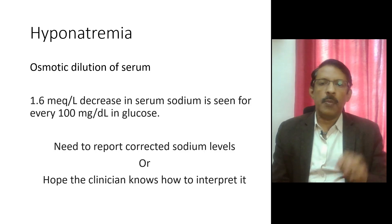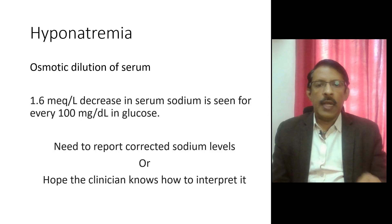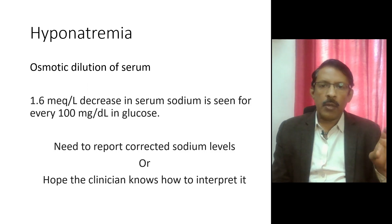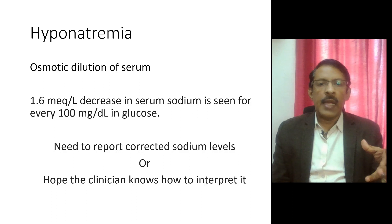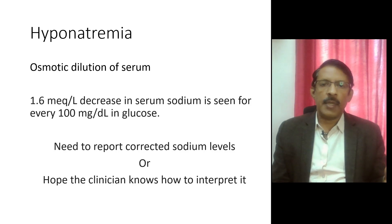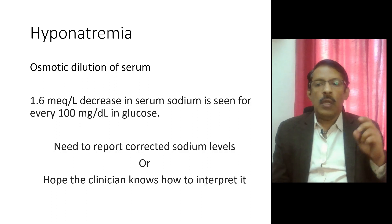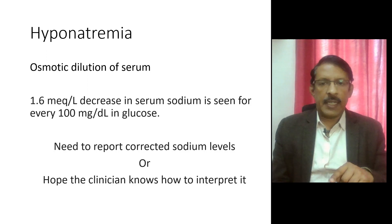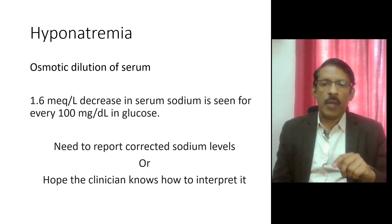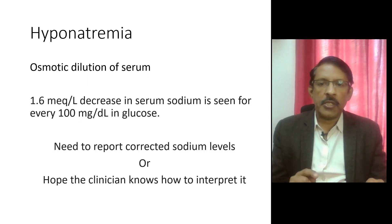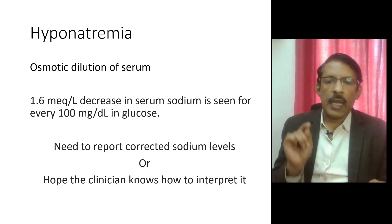Sodium: hyponatremia is the most common feature seen in diabetic ketoacidosis and it occurs on two accounts. The first is osmotic dilution of the serum. There is hyperglycemia — the increased blood glucose level exerts an osmotic potential and draws more intracellular fluid into the extracellular compartment. This causes extravascular expansion and a decrease in sodium levels. Usually there is about a 1.6 milliequivalents per liter decrease of sodium for every 100 milligrams per deciliter rise of blood glucose level. So either the lab issues a corrected sodium report or the clinician evaluates the sodium levels in this light, making correction for the glycemic levels.